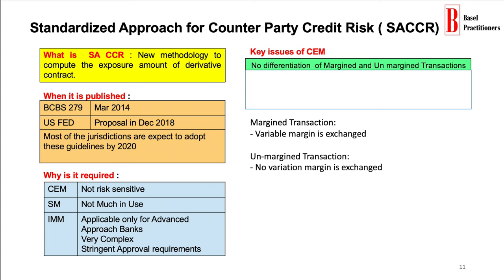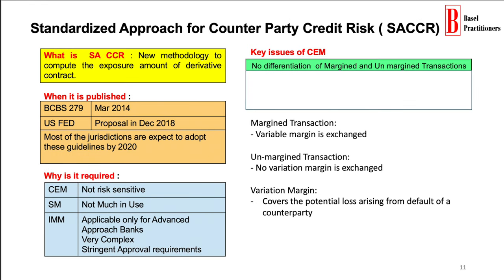Let us understand the distinction between an initial margin and a variation margin. Coming to variation margins, when parties exchange variation margin on a periodic basis during the term of a derivative contract, as typically specified in a variation margin agreement, variation margin offsets changes in the market value of a derivative contract, and thereby covers the potential loss arising from default of a counterparty.